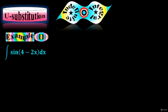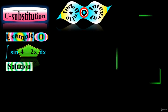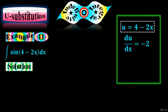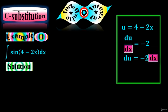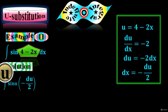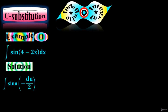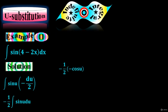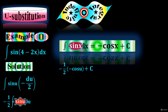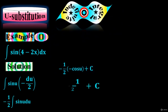Solve the integral of sin(4 minus 2x) dx. Suppose 4 minus 2x equals u. Taking the derivative on both sides, du/dx equals minus 2, so dx equals minus du over 2. Replace 4 minus 2x by u and dx by minus du over 2, then pull the 1/2 outside the integral. The integral of sin(u) equals minus cos(u) plus C, applying the standard formula. Substitute back u = 4 minus 2x for the final expression.